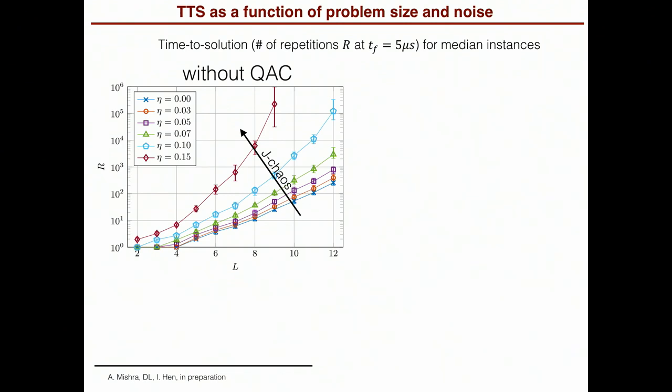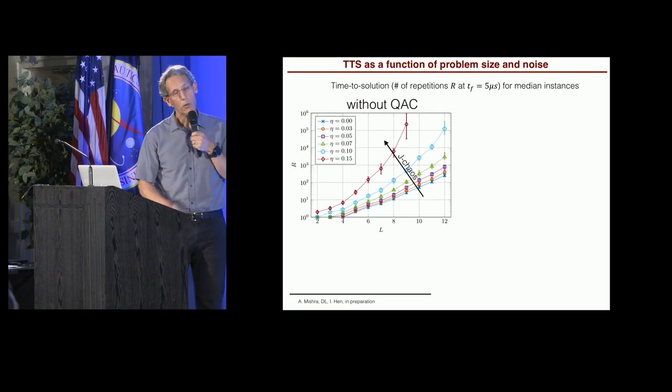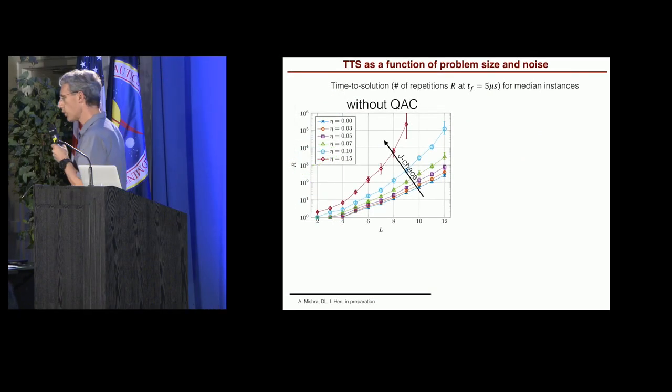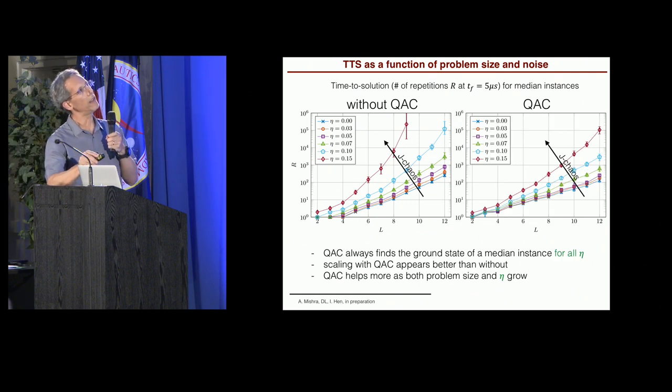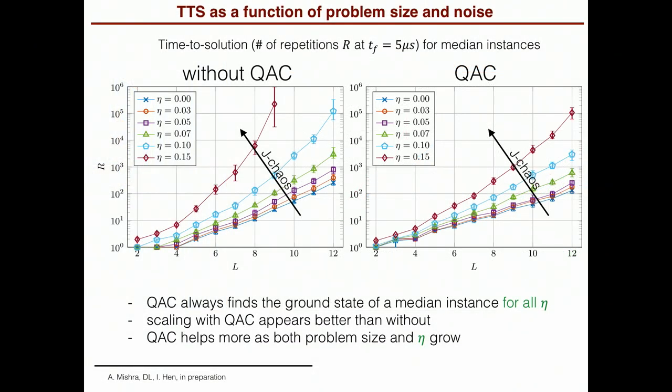All right. So this is sorted by the amount of added noise. And we see that at the highest noise level, this is eta is 0.15. In fact, we don't even get to sizes above nine because they're never solved essentially. All right. Okay. That's without the quantum annealing correction. What happens when we do quantum annealing correction? Now you see that the effect is reduced. All right. So all these slopes have come down.